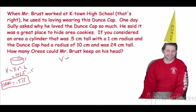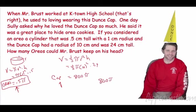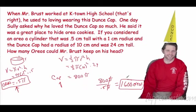What's the volume of the dunce cap? That's one-third pi r squared h. The radius is 10 and the height is 24. So one-third times pi times 100 times 24: 100 times 24 is 2400, divided by 3 is 800 pi. Now how many Oreos fit in the cap? Divide 800 pi by 0.5 pi — the pi's cancel — and we get 1600 Oreos!